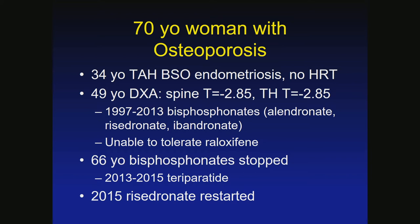At age 66, the bisphosphonates were stopped and she was started on teriparatide — a bone-building anabolic agent. When teriparatide or abaloparatide are stopped, if you don't put patients on anything else, all that benefit from the daily subcutaneous injection goes away. We are only allowed to give teriparatide for two years. So we have to start another agent — many times another bisphosphonate. She got risedronate again.